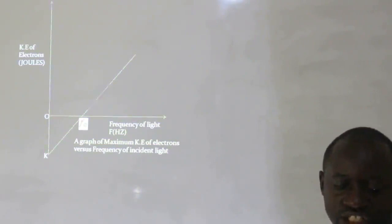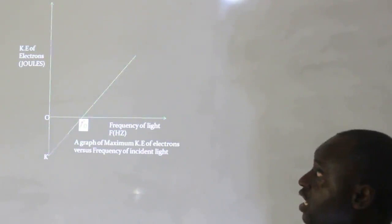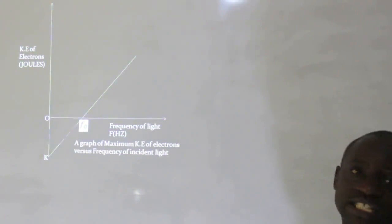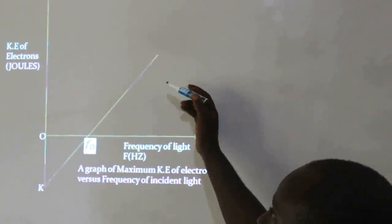he came out with a graph in which he plotted the value of the kinetic energy of the electrons being emitted on the surface of the metal against the frequency of the light rays that falls on the metal.